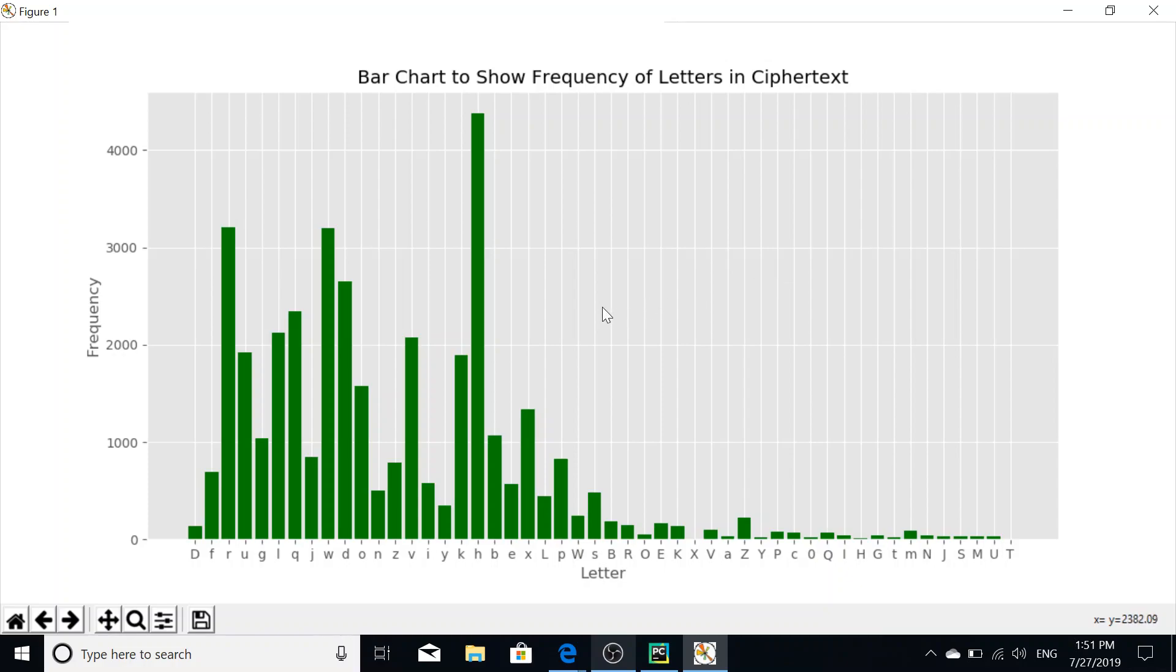Yes, statistical frequency analysis is great, as it allows you to essentially know the shift of the Caesar cipher.